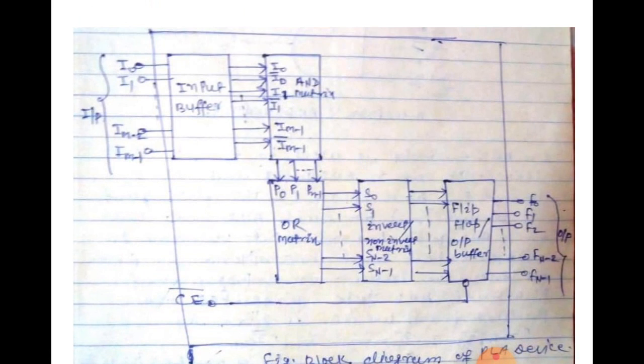This product term as input in OR matrix and output is sum. Sum is represented by S. That means S0, S1, that is S N minus 1. That is capital N terms.